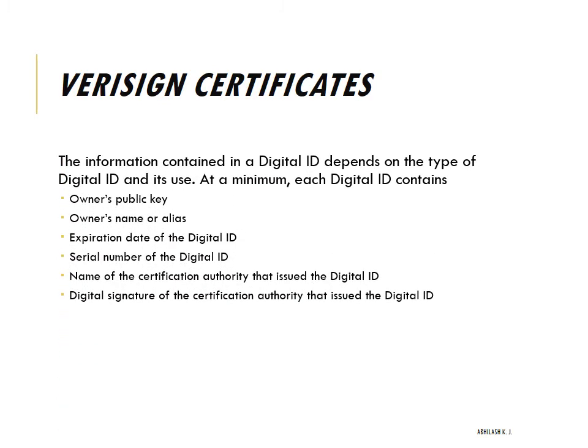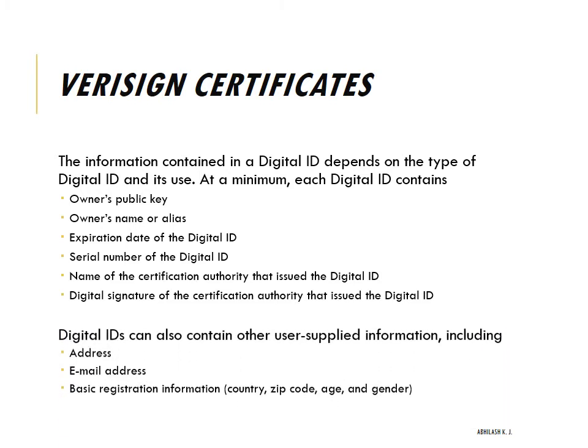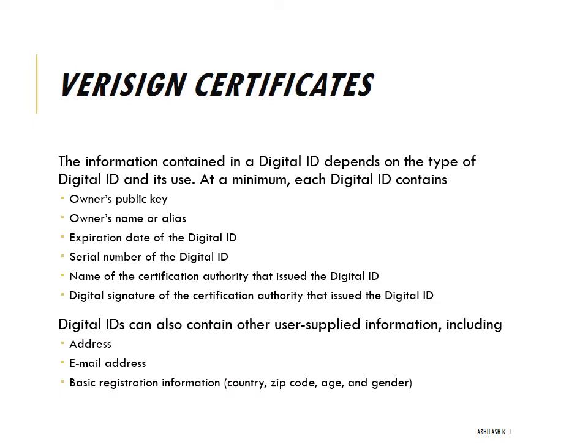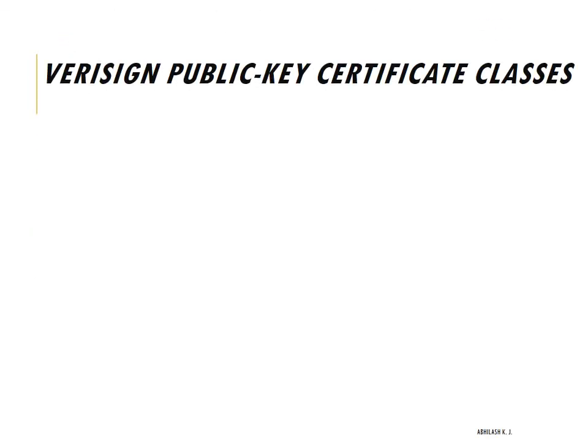A digital ID contains at minimum the owner's public key, owner's name or alias, expiration date, serial number, name of the certification authority that issued it, and the digital signature of that certification authority. It may also contain user-supplied information such as email address and basic registration information like country, zip code, and gender. VeriSign provides three levels or classes of security for public key certificates, as summarized in this particular table.